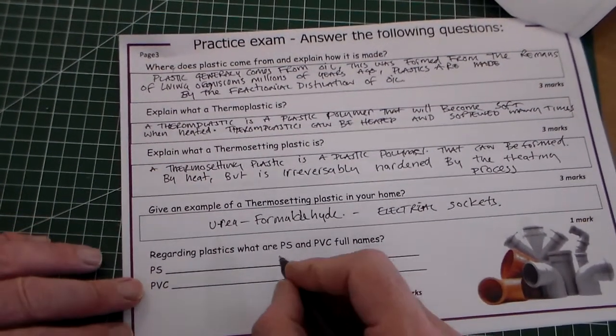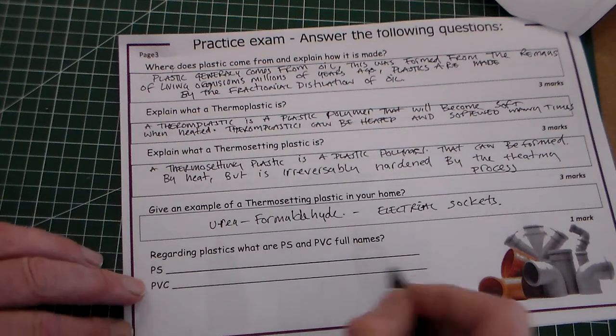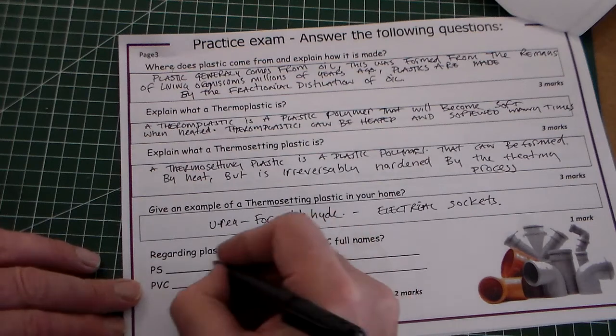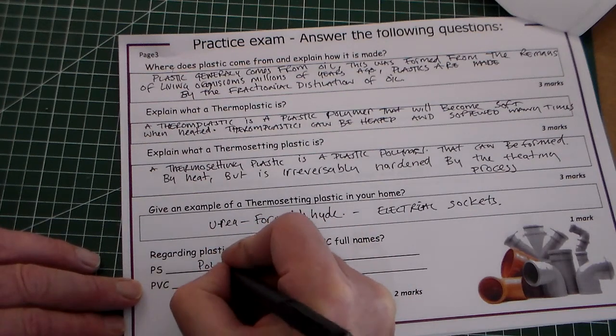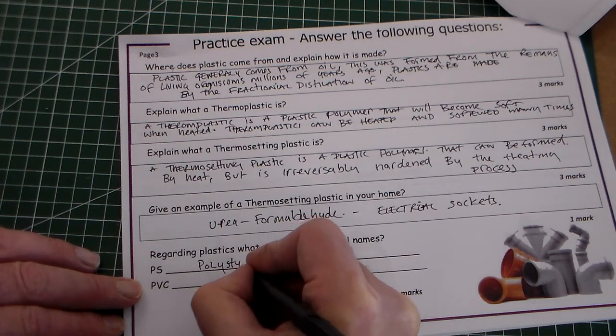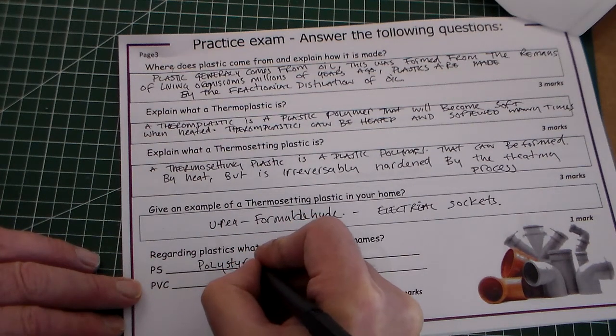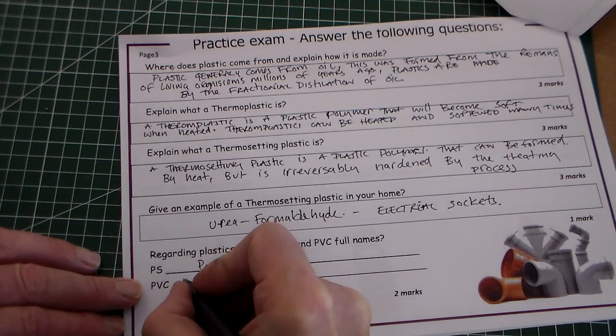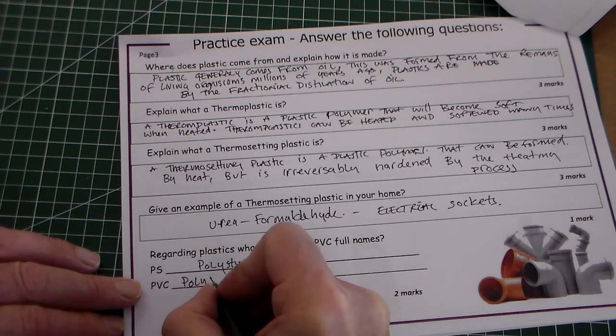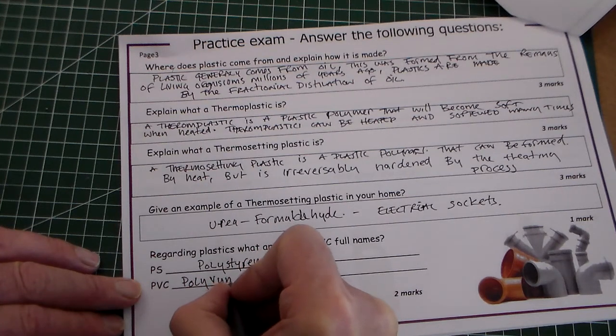Regarding plastics, what are PS and PVC full names? There's an image there of some plastic pipes. PS is polystyrene, and PVC is polyvinyl chloride.